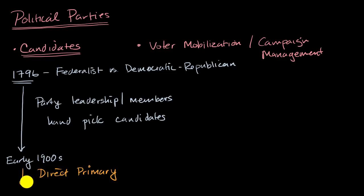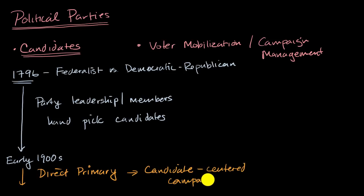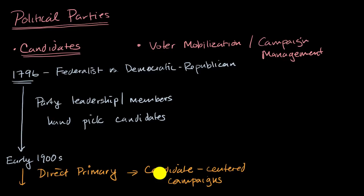Now, this change that has happened over roughly the last hundred years has changed the power dynamic between the parties and the candidates. For the first over a hundred years, the party is where a lot of the power was. But once you start having the direct primary, it becomes a lot more about candidate-centered campaigns, where things become much more about the position and the personality of the candidate than maybe as much about the party platform. And because of that, it has become more common where even if someone is a registered Republican, they might vote the other way, or if someone is a registered Democrat, they might vote the other way, if a candidate is particularly appealing.